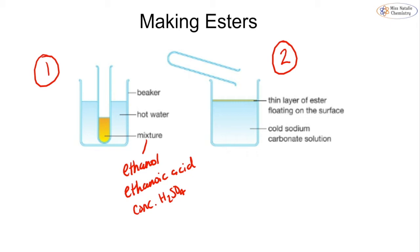In the second step, we empty the test tube mixture onto a solution of cold sodium carbonate or sodium hydrogen carbonate. Bubbles will appear and eventually stop, and you'll see a thin layer of oily liquid on top — that is your ester. The ester is not soluble in the sodium carbonate solution or any aqueous solution, so it floats on top. Esters have a very sweet smell.